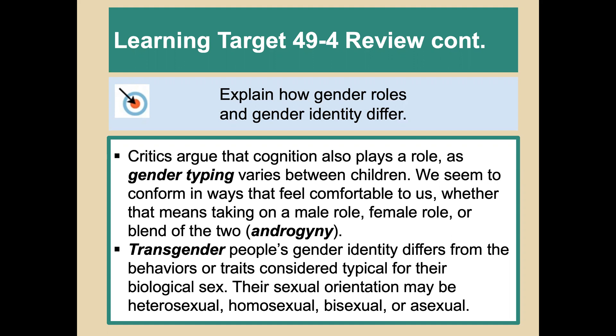Transgender people's gender identity differs from the behaviors or traits considered typical for their biological sex. Their sexual orientation is something different — it could be heterosexual, homosexual, bisexual, or asexual. And we have made it to the end of that module. It wasn't too long. Thanks for listening. Take care.